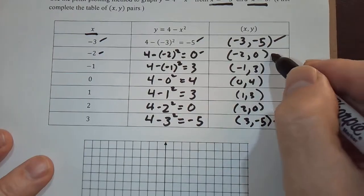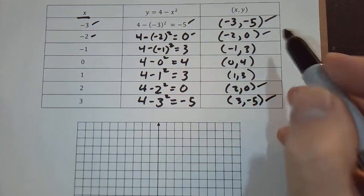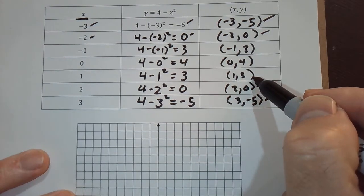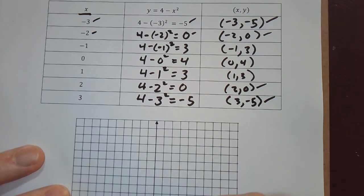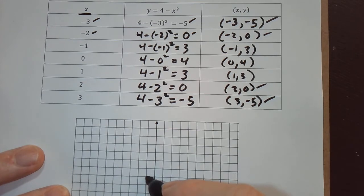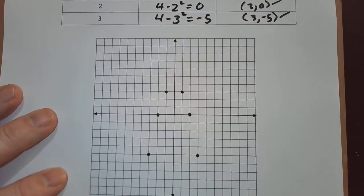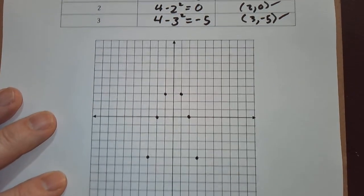That took care of this and this. And then we have negative 1, 3 as well as 1, 3. So negative 1 up 3, positive 1 up 3. Puts us right there.